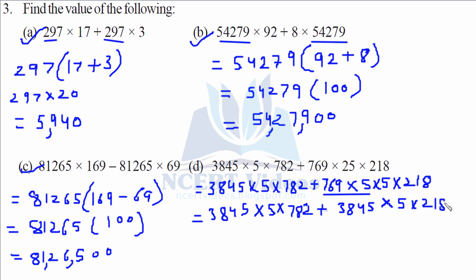Now look, something common? Yes, 3845 into 5 is common. So let's multiply it. You can see in both the sides. It is nothing but after multiplication 19225. So we will take it as common. Now what we are left with? 782 plus, there is a plus sign, plus 218. So now look, these two numbers make 1000 when we add them. So it becomes easier now to multiply it with 19225. Bracket sign denotes multiplication. 19225000. That is your question number third part d.